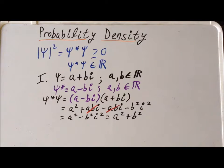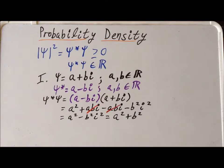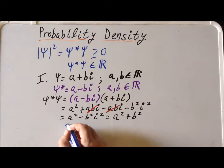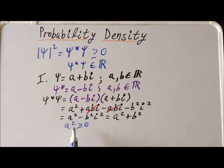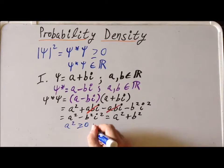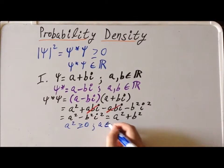Here's where we use the fact that a and b are both real numbers. Since a is a real number, that tells us two things about a squared. First, a squared has to be greater than or equal to zero — if a is negative, squaring gives a positive number; if a is zero, a squared is zero; and if a is positive, a squared is greater than zero. So in all three cases, a squared must be greater than or equal to zero. And if we take a real number a and multiply it by itself, we get a real number, because the real numbers are closed under multiplication.